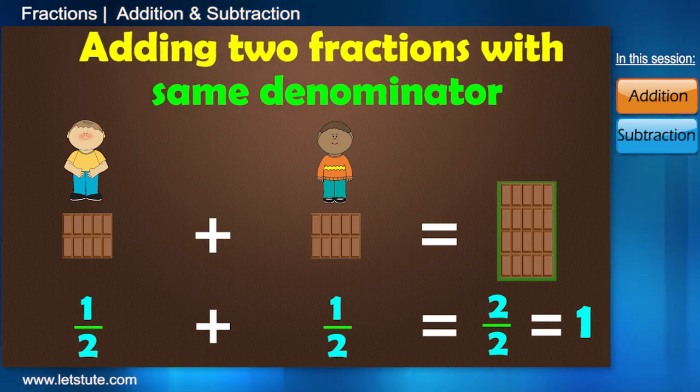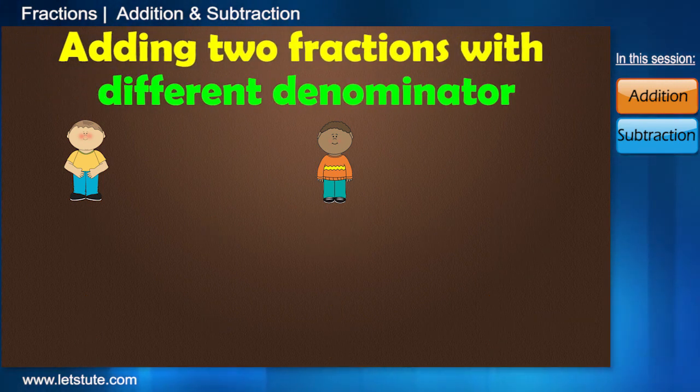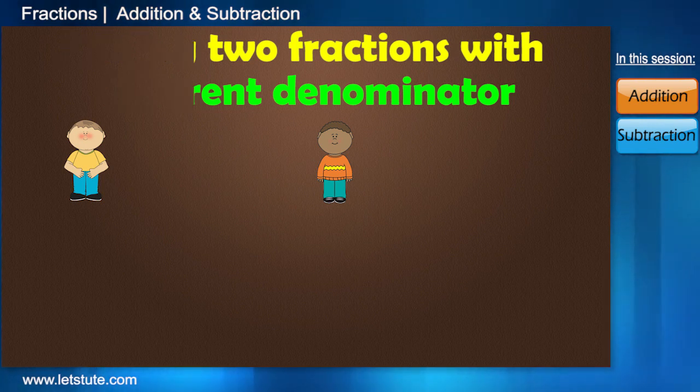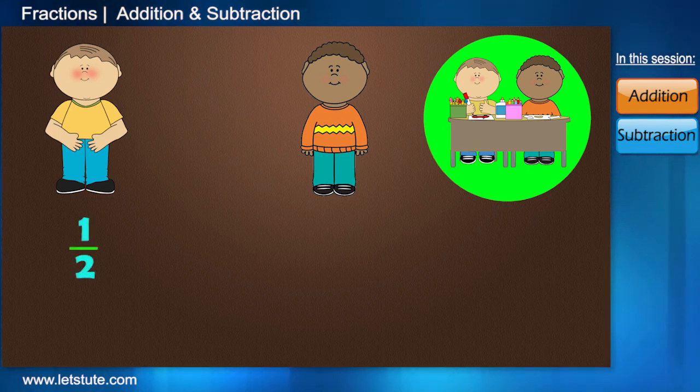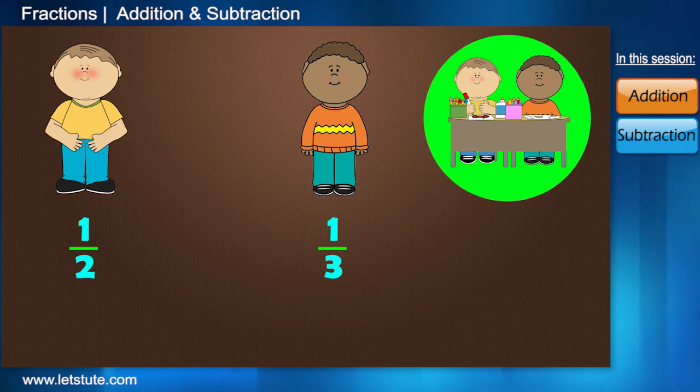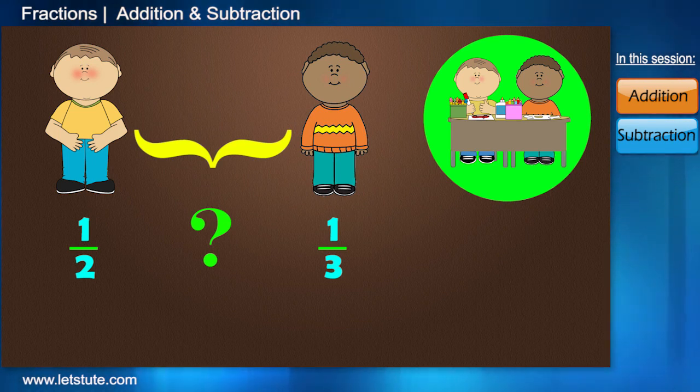But then what happens when the denominators are not same? You and your friend are jointly working on a project. You have completed half of the project and your friend has completed 1 third part of the project. So now, what is the total number of projects completed by both of you combined?